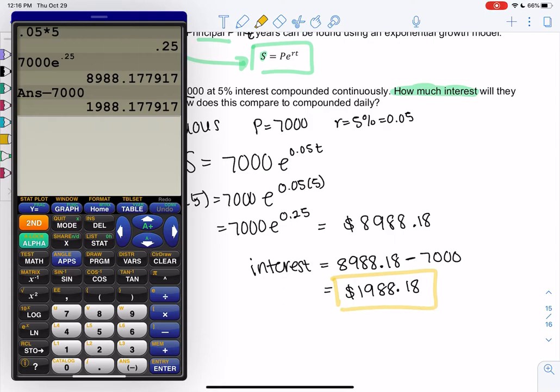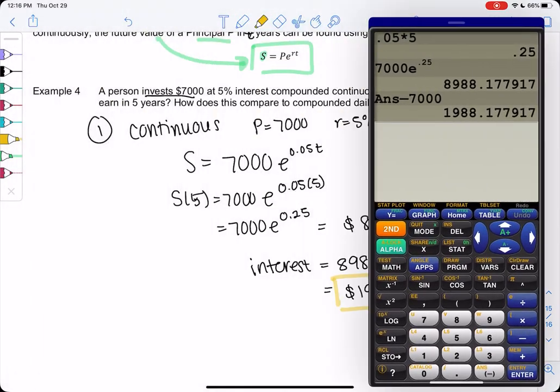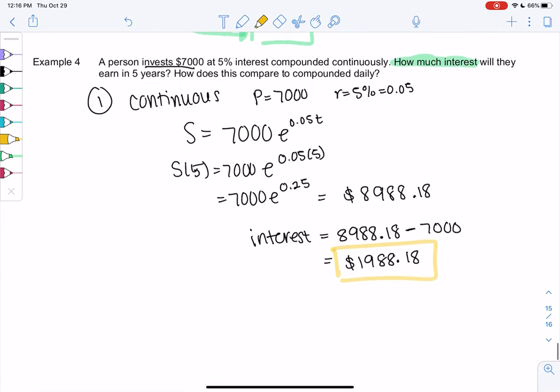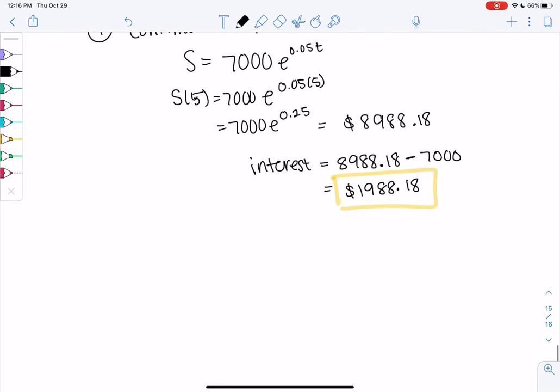And so I just want to compare this to compounded daily, just to convince you that this still gives us a pretty good estimate, even though in practice it doesn't quite make sense. So let's see what compounded daily looks like.